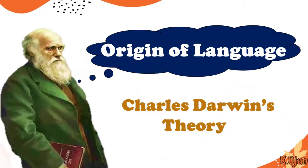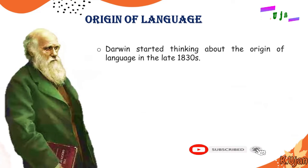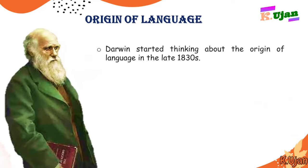According to this book, we can deduce Charles Darwin's theory. Darwin started thinking about the origin of language in the late 1830s. He started working on the origin of human beings and the origin of language in the 1830s, and that was actually the start of working on language.